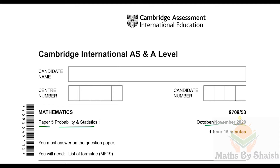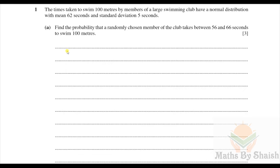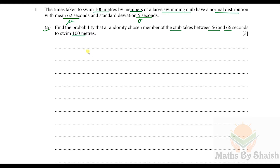9709/53. Let's start with Question 1. The times taken to swim 100 meters by members of a large swimming club have a normal distribution with mean 62 seconds (μ) and standard deviation 5 seconds (σ). Part (a): find the probability that a randomly chosen member of the club takes between 56 and 66 seconds to swim 100 meters.